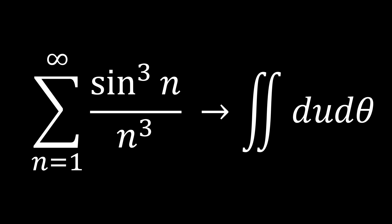Hello guys and welcome to another calculus video. Today we're going to be checking out this amazing sum: the sum from n equals 1 to infinity of sine cubed of n over n cubed. And we're going to be turning it into a double integral, so buckle in and get ready for this amazing infinite sum.